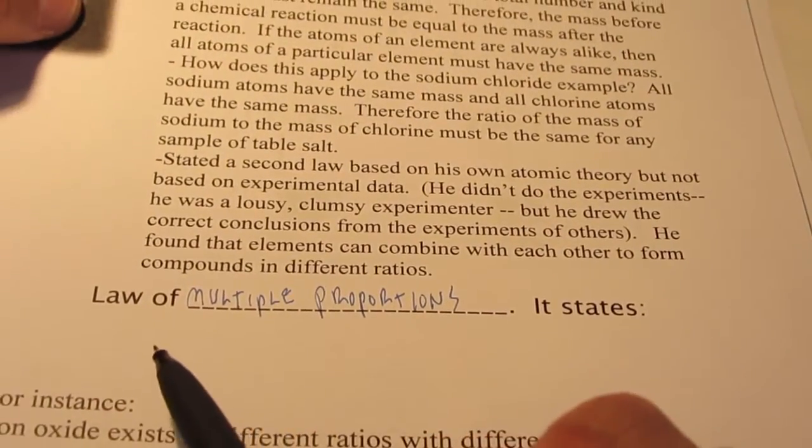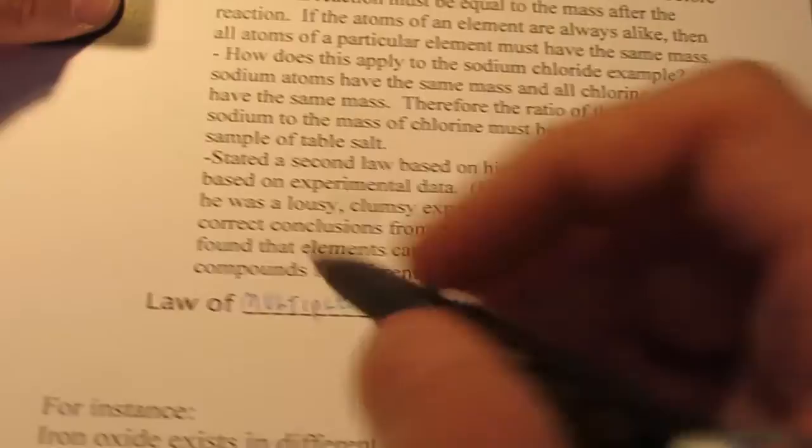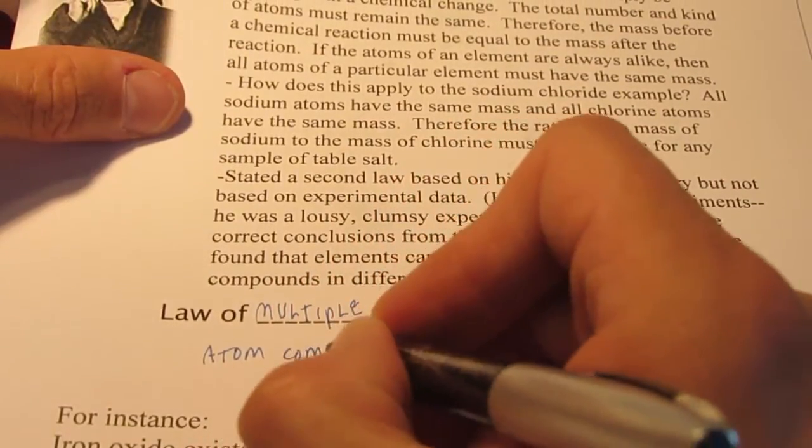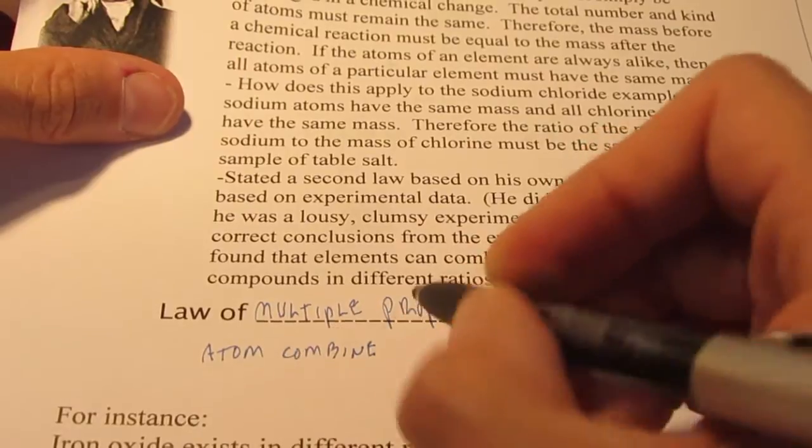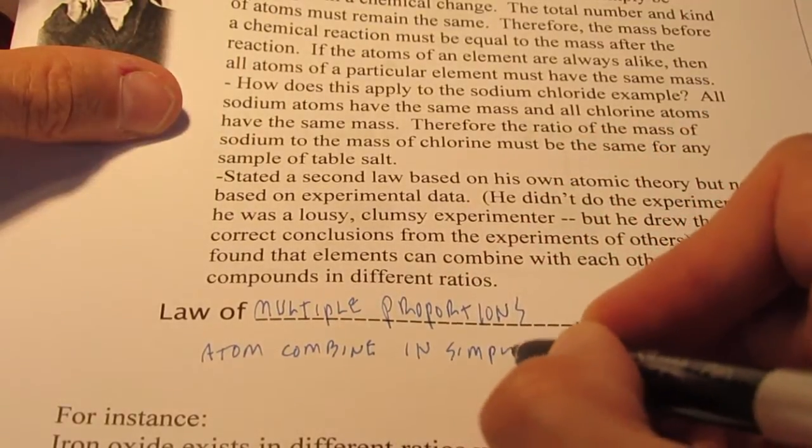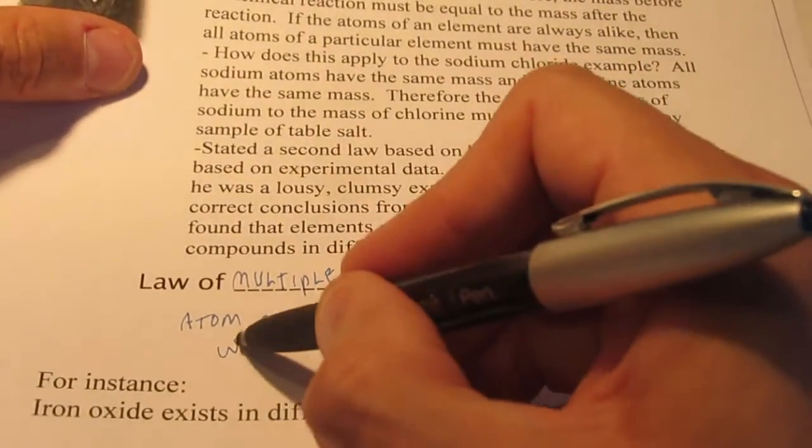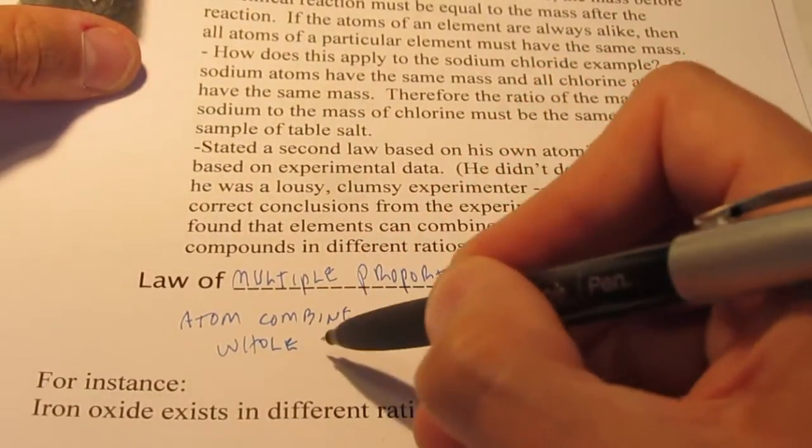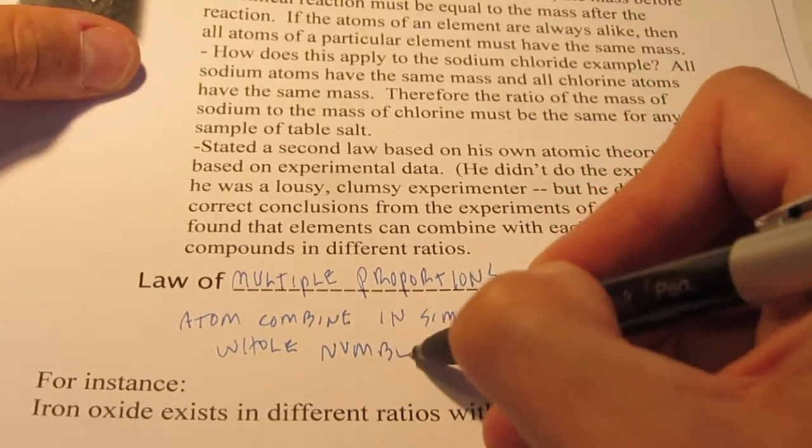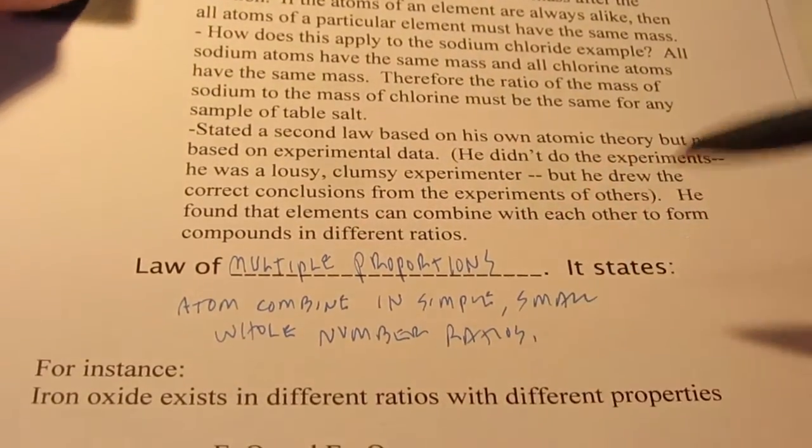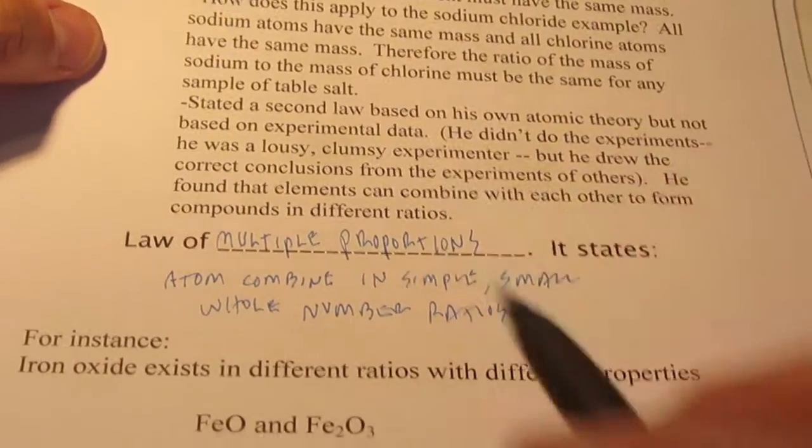The law of multiple proportions. So that simply tells us that atoms come together in simple and small whole number ratios.